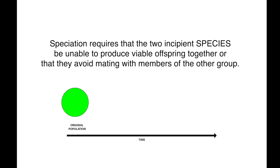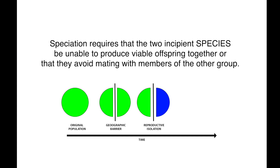Speciation requires that two incipient species be unable to produce viable offspring together, or that they avoid mating with the members of the other group.